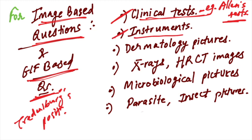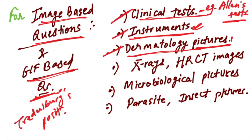Surgical instruments — Foley's, Ryle's tubes, surgical blades, sutures — many of these can be asked directly. Some dermatological pictures are also trending, such as identifying a cyst, blackening, blisters, nodules, papules, and erythema. You need to know these along with their treatment, as questions will be framed that way.